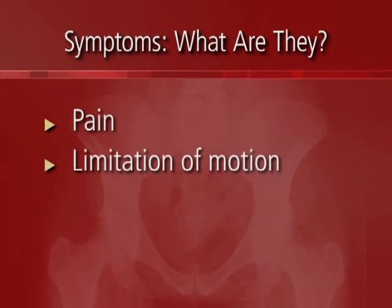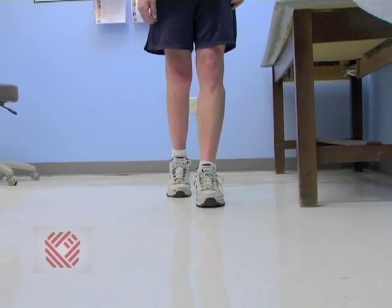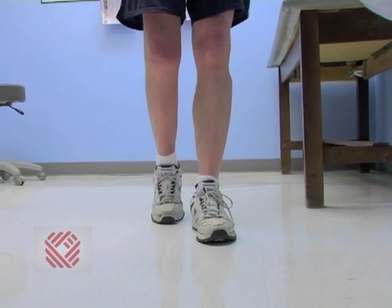It gets harder to get up from a seated position, and sometimes you can wind up with some shortening of the leg as a result of the joint wearing down, and then you can start to walk with a limp. As the hip socket continues to wear down and there's not much cartilage left, even if you're not weight bearing you can still have pain because the bones are rubbing against each other, and just changing position — whether in bed or getting up from a chair — can be rather uncomfortable.